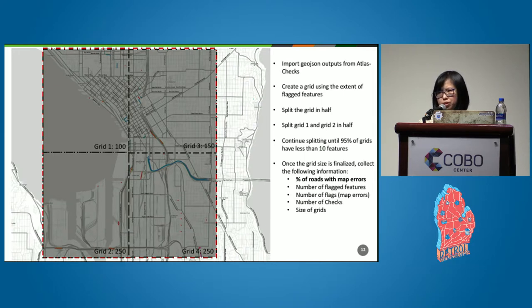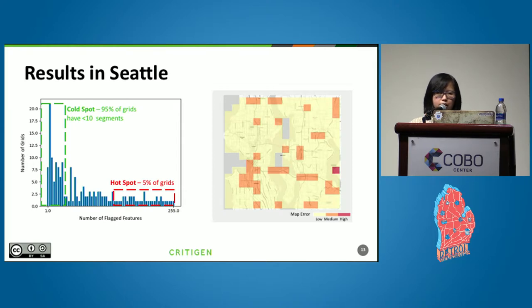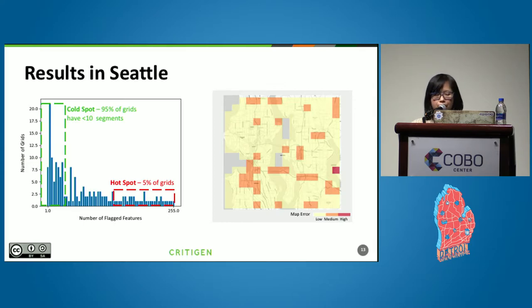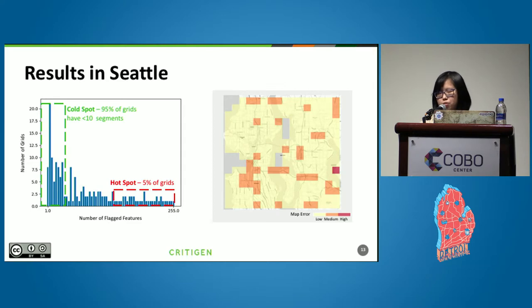This is a more visual view of what we can get as a back-end workflow. When you execute the program and see the Seattle results, you get a histogram showing that 95% of the grids are in the cold spot area. These are configurable figures — you can adjust your filter to be a little narrower or more relaxed, which forces the program to find where the hotspots are. On the right-hand side, you'll get GeoJSON outputs with counts of flagged features and other metrics you can combine with the HOT Tasking Manager or use to understand which grid areas need attention in your city.